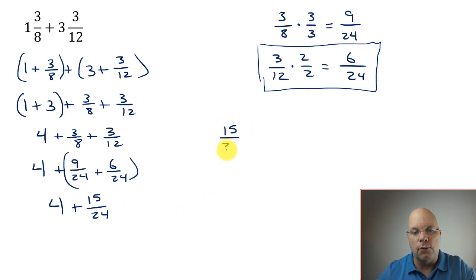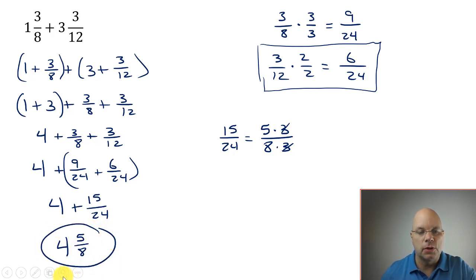So fifteen twenty-fourths is equal to five threes over eight threes. Five times three is fifteen. Eight times three is twenty-four. We factor out this whole, the three-thirds, and we're left with five-eighths. So our final sum would be four and five-eighths. Okay, I hope that helps with common denominators, adding fractions, adding mixed numbers. If you feel like you need some practice on this, there's quite a bit of practice underneath the video. And thank you for putting in the extra time and doing the extra work.